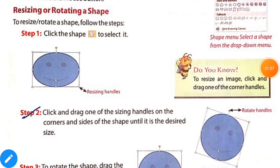After that, step 2 is click and drag one of the sizing handles on the corners and sides of the shape until it is the desired size. Like this, this is the rotate handle.